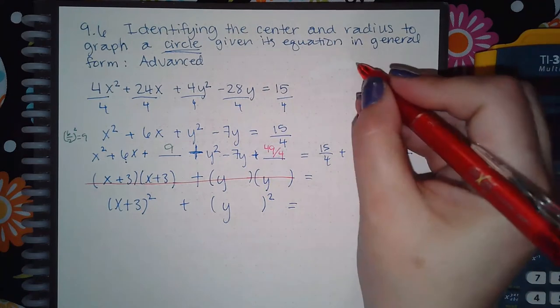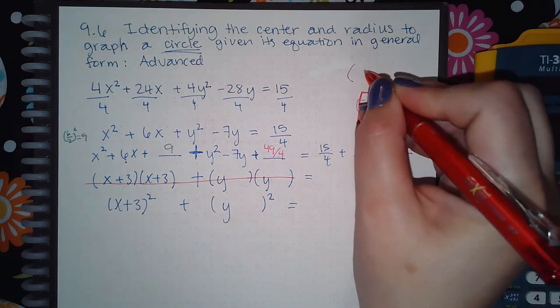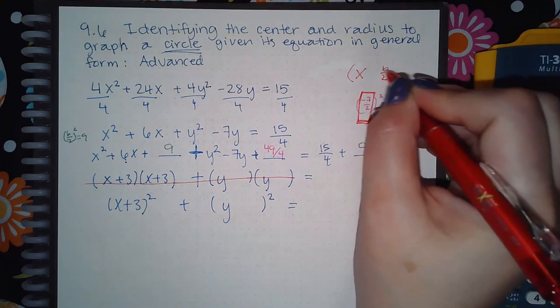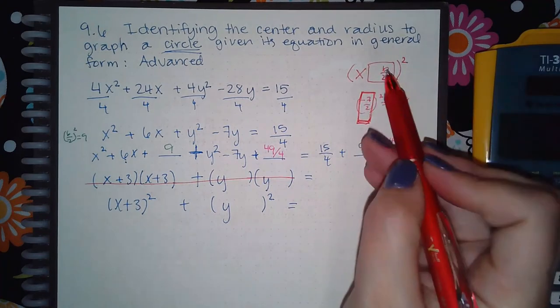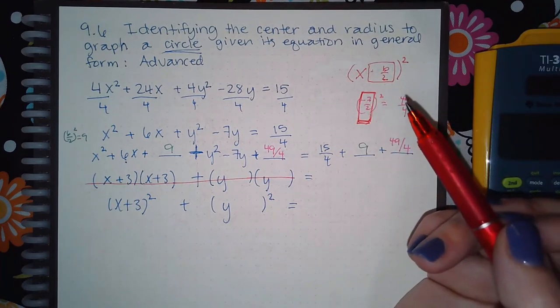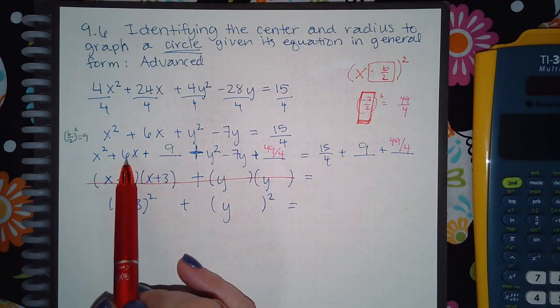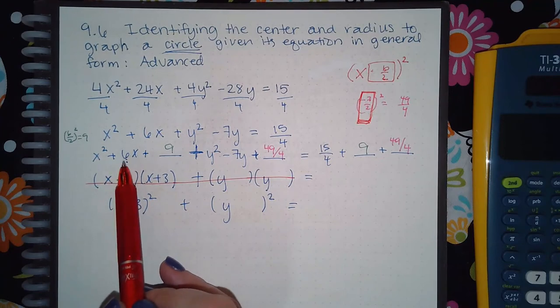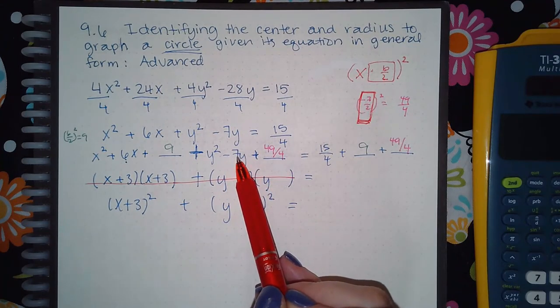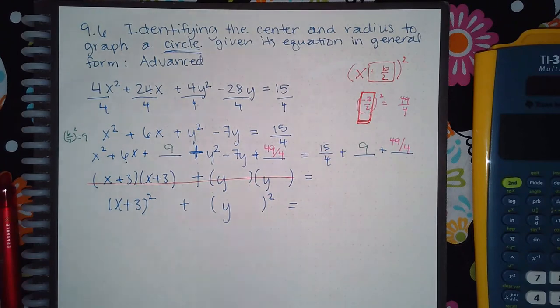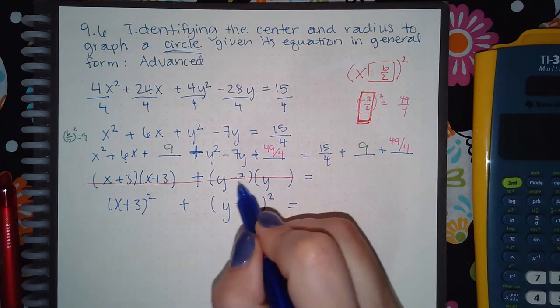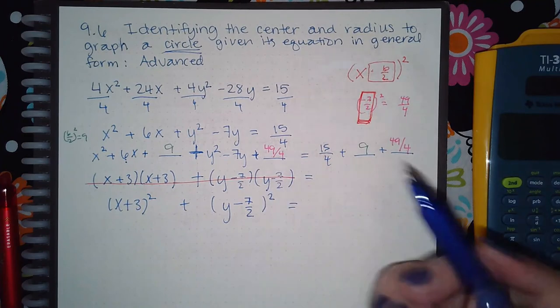So whatever you get for b over 2, that is what is going to go inside of that parentheses when you're trying to factor it. It's always going to be x or y, whatever variable it is, and then here it's going to be the b over 2, sign included. So if the b over 2 was positive, you'll put a plus; if the b over 2 was negative, you'd put a minus. So in here, when I took 6 over 2, that's positive 3, and here if I take negative 7 and divide it by 2, it doesn't simplify—it's just negative 7 over 2. If you're not sure, you can always put it here and here and foil it out just to make sure that you end up with this trinomial.